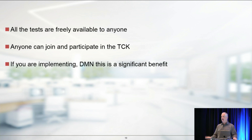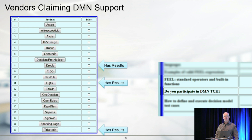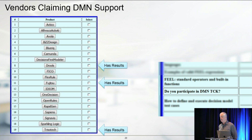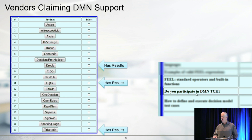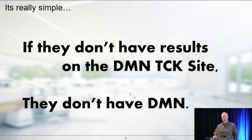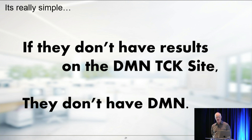All the tests are freely available and anyone can join and participate in the TCK. If you're implementing DMN, this is a significant benefit. There are a lot of vendors that claim DMN support - this is taken from the DM Community site - but only three of them have results on the TCK. There is a flag on the site indicating whether a vendor participates in the TCK. The main message is: if a vendor claims to have DMN support but they don't have results on the DMN TCK site, you've got to ask why. I would put forward that they don't really have DMN, and they certainly don't have full support of DMN.